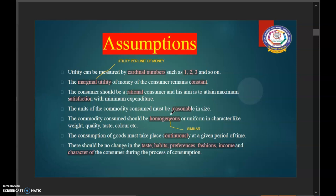Next one, the commodity consumed should be homogenous. It should be similar or uniform in character like weight, quality, taste, color and all.